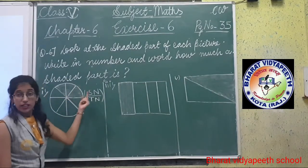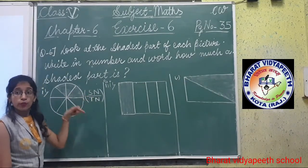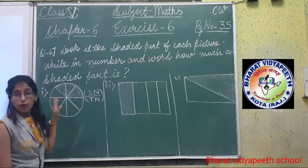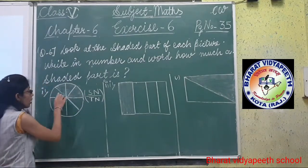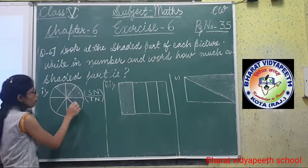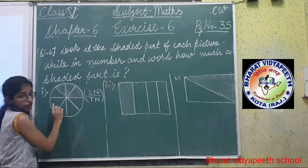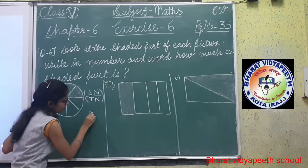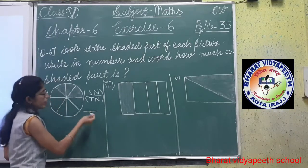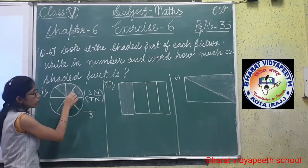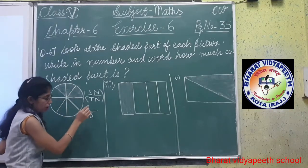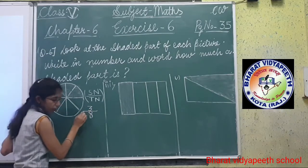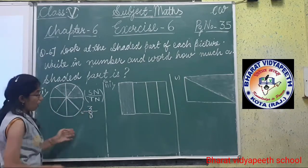Numerator is up, denominator is down. Now how many total number of parts? 1, 2, 3, 4, 5, 6, 7, 8. Clear? Shaded part: 1, 2, 3. So the fraction is 3 over 8. Total number of parts 8, shaded part 3.